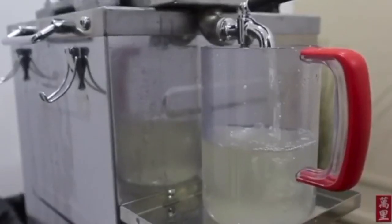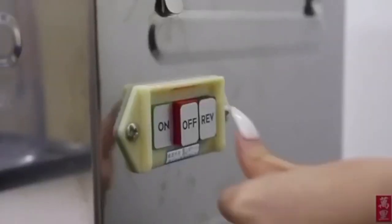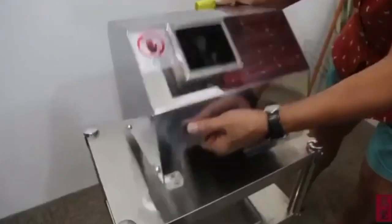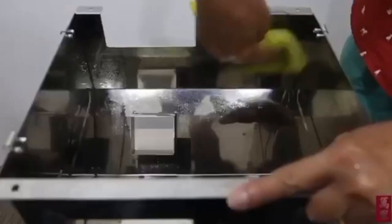Keep the tap turned on to allow the water to be flushed out. Switch off the machine, take a damp cloth, and wipe the cover.